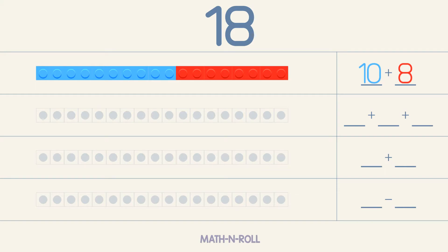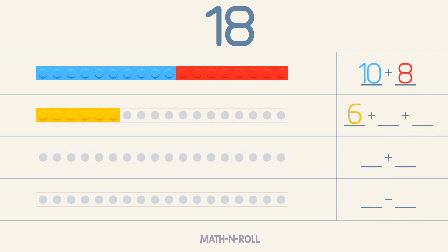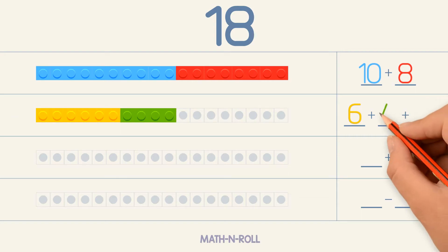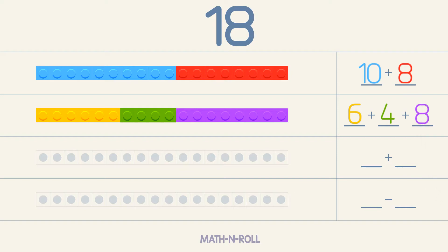Now make 18 by adding 3 numbers. Our first number is 6. To make 18, we need 8 more pieces. So 6 plus 4 plus 8 equals 18.